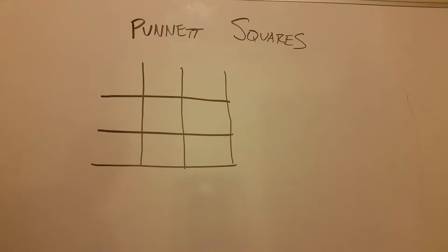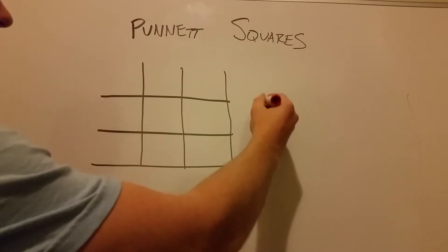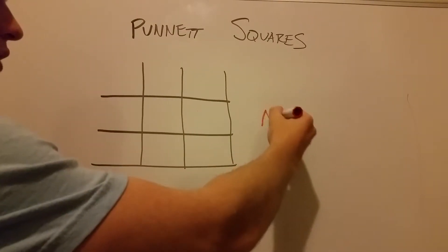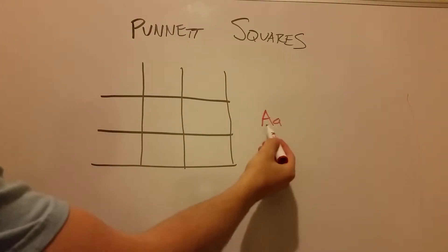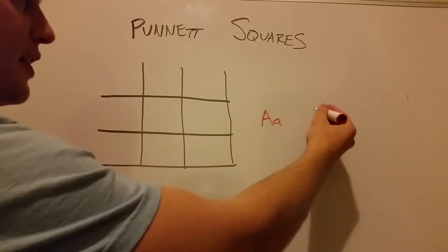To get started, I want to start with two heterozygous parents. Now, what does that mean? That means that you have a combination of dominant and recessive alleles for each parent.